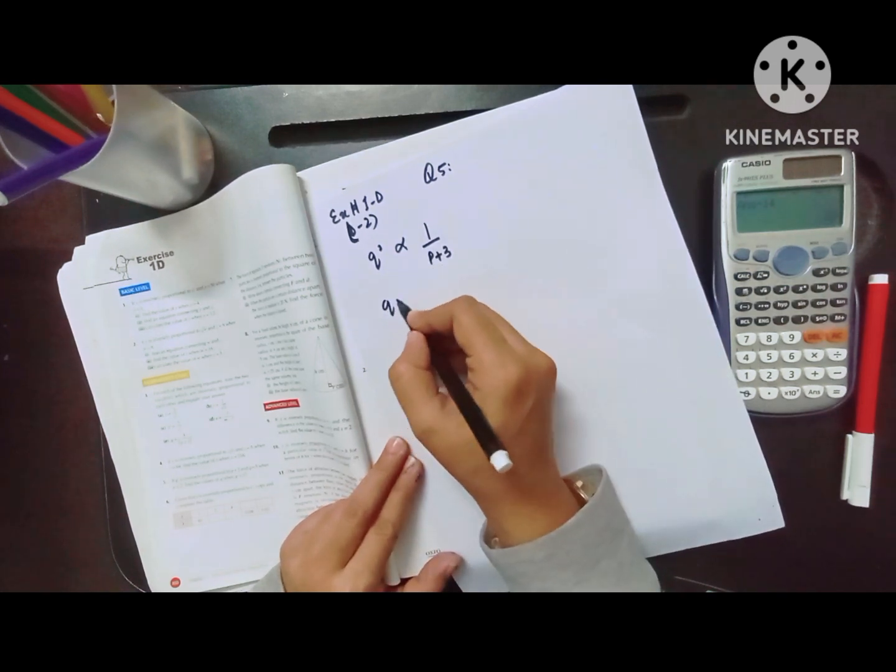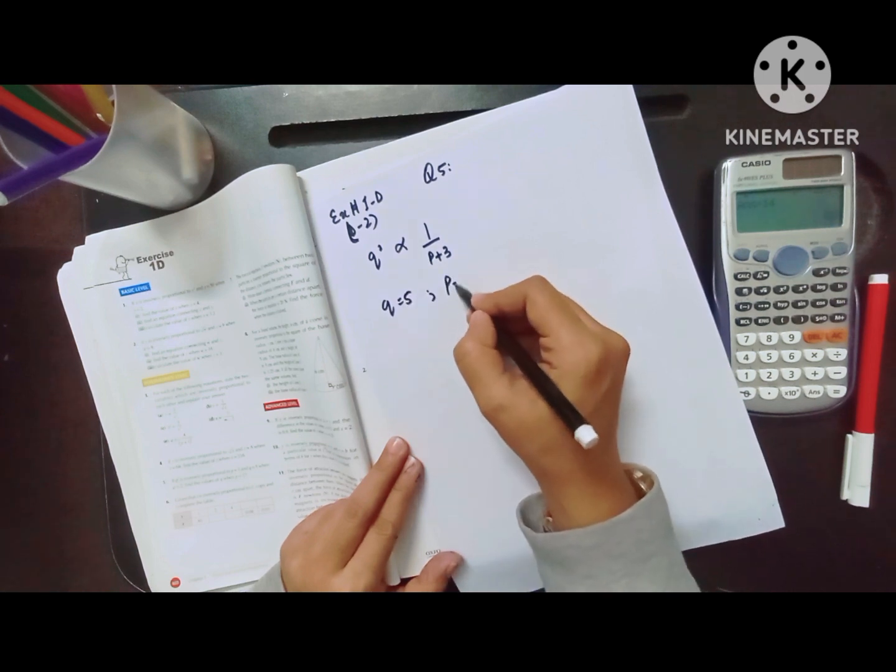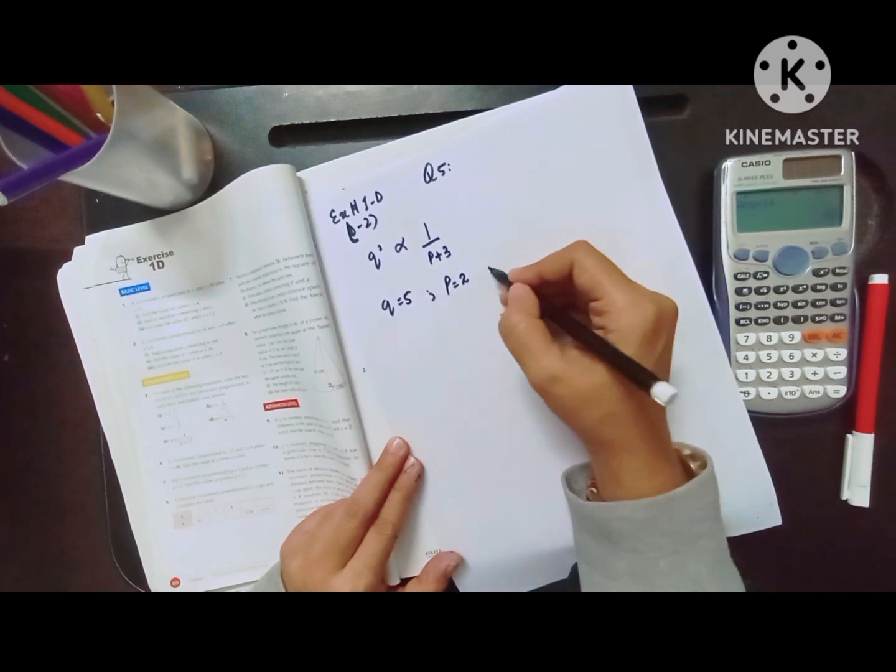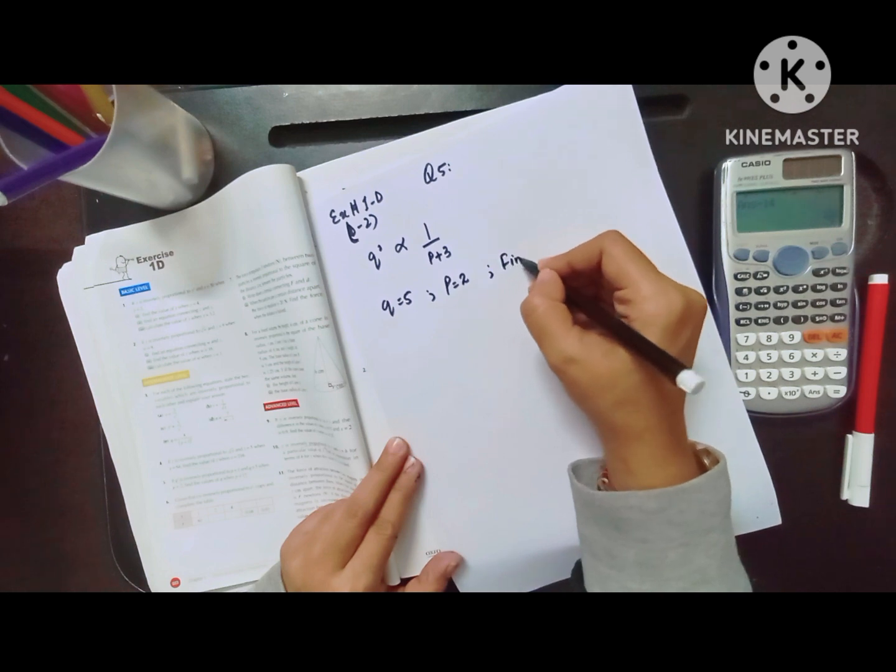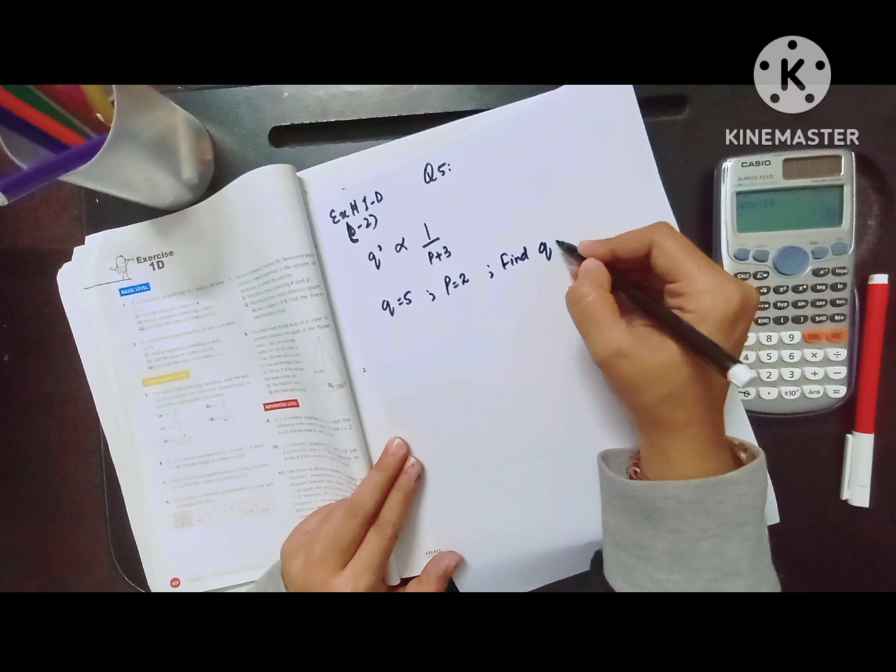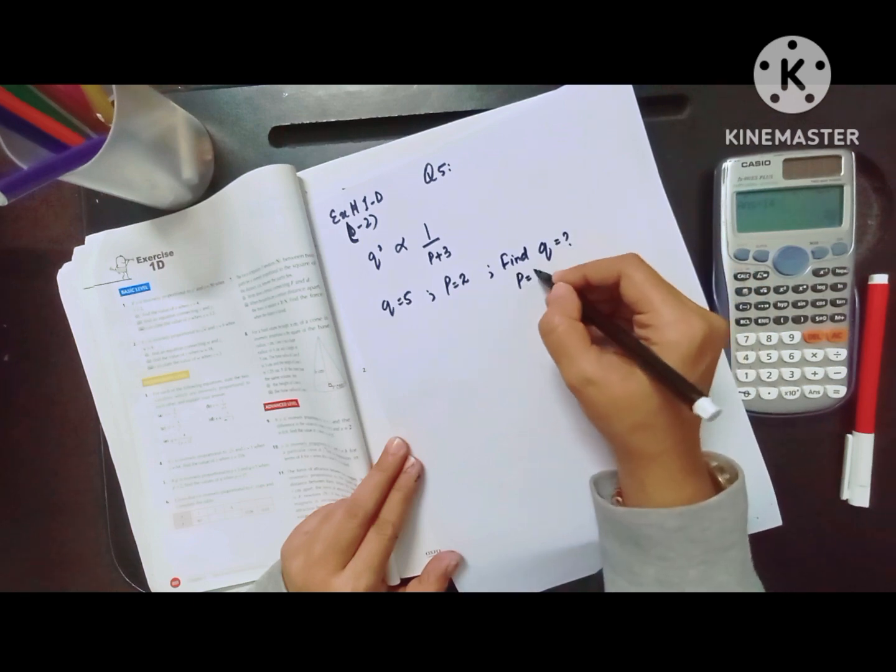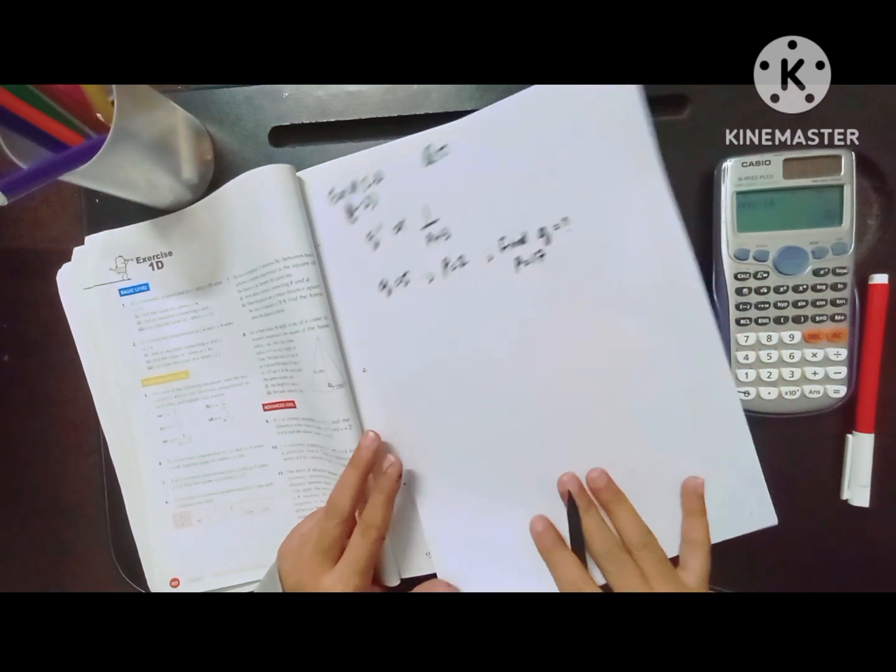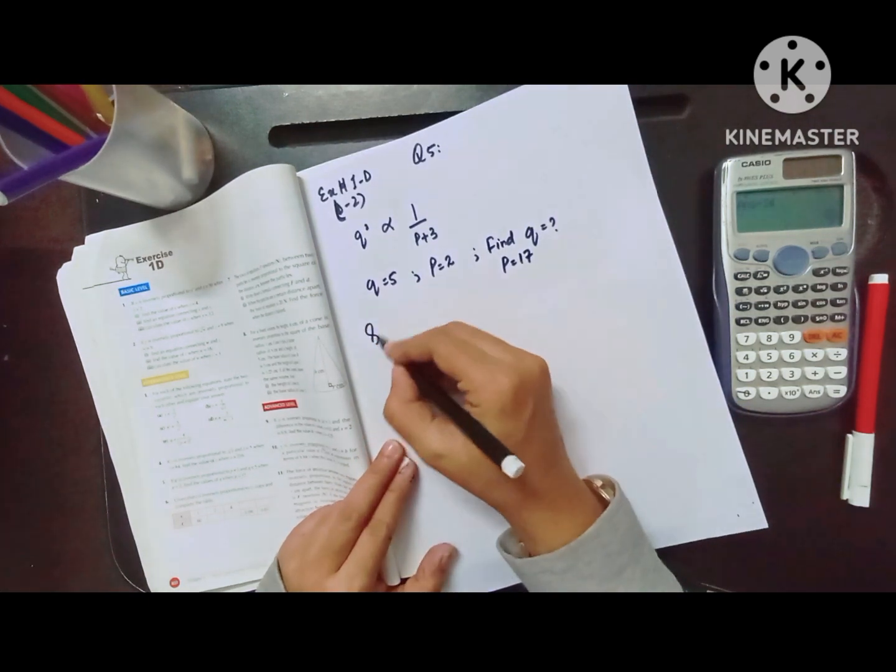They are saying when q equals 5 and p equals 2, what you need to find is the value of q when the value of p is given as 17. That is the whole question, so for the solution we can say...